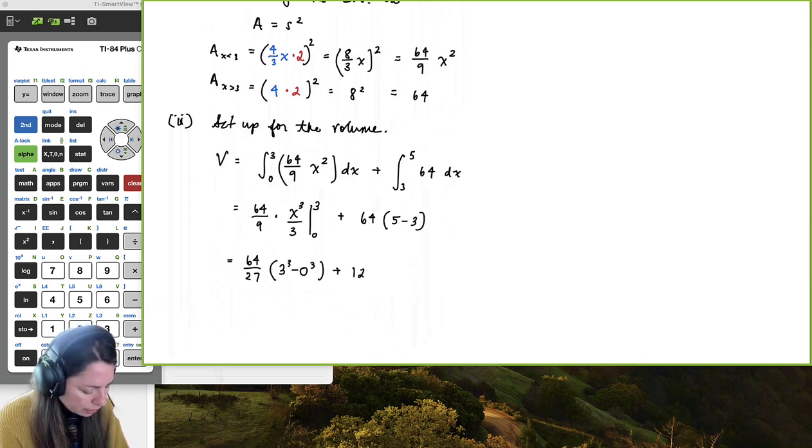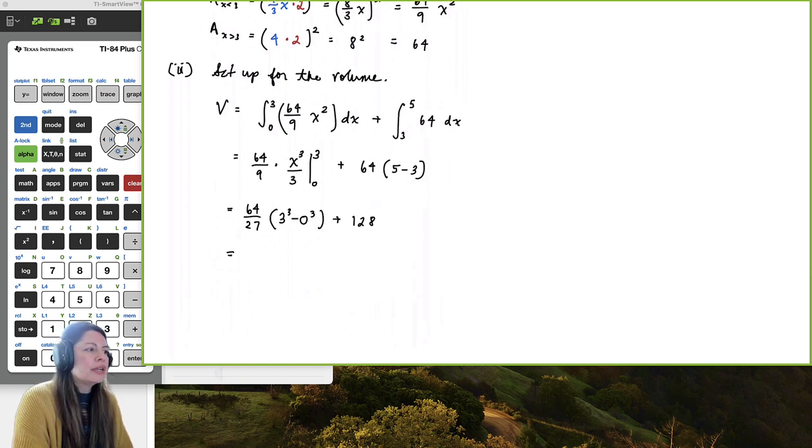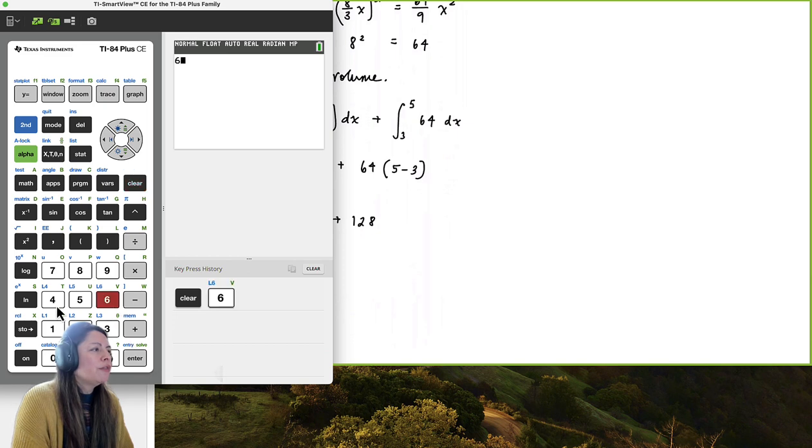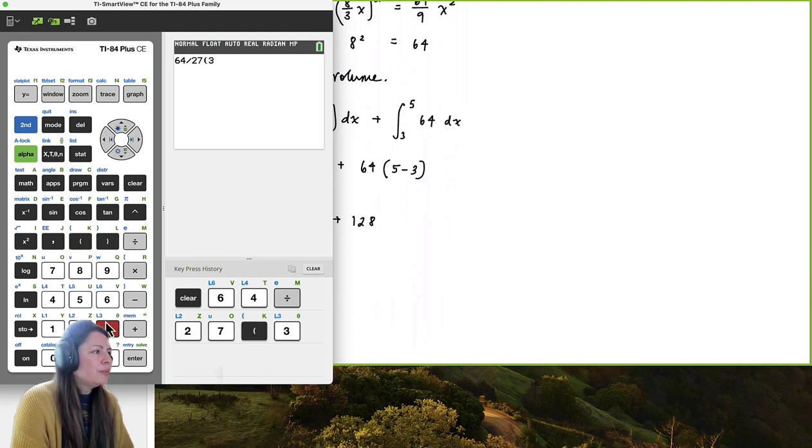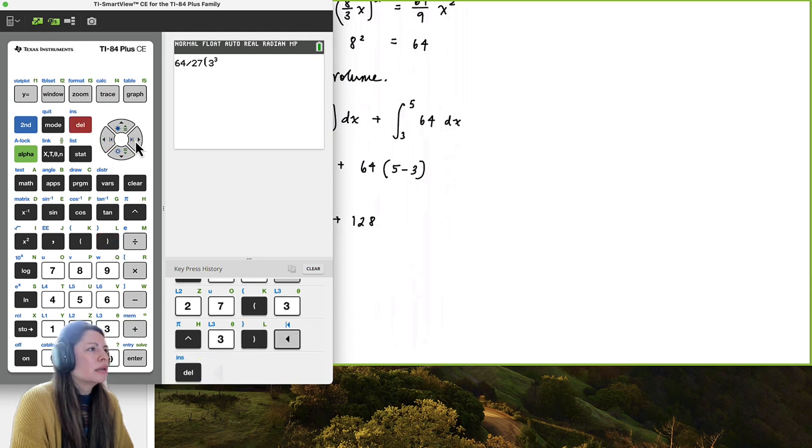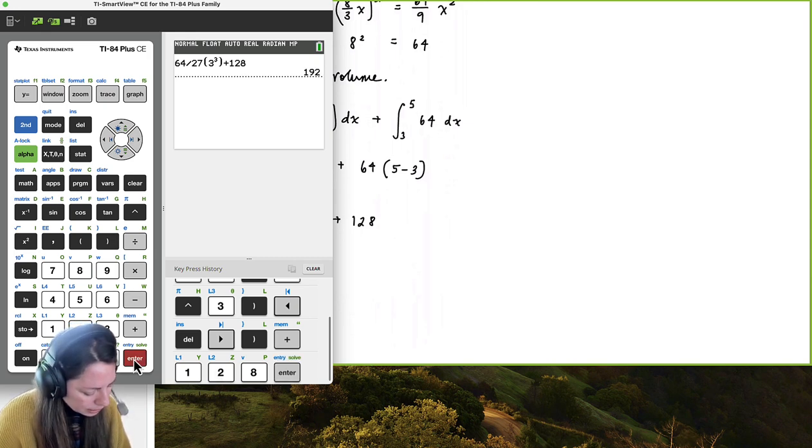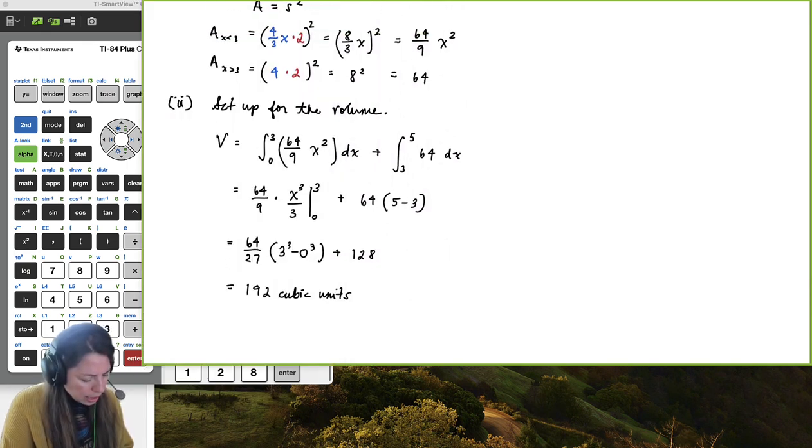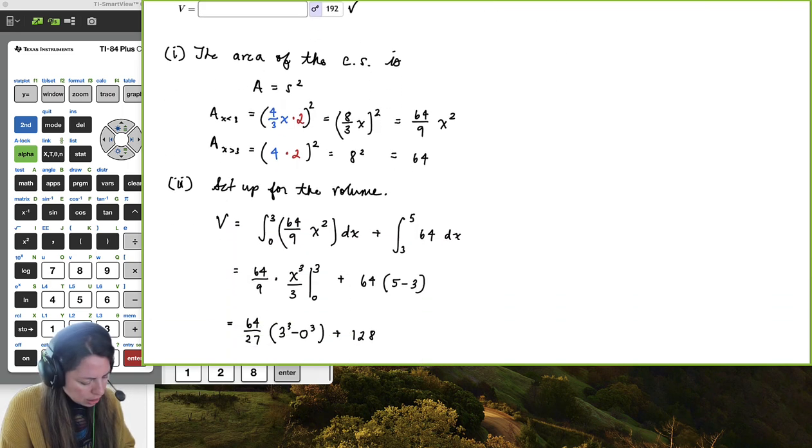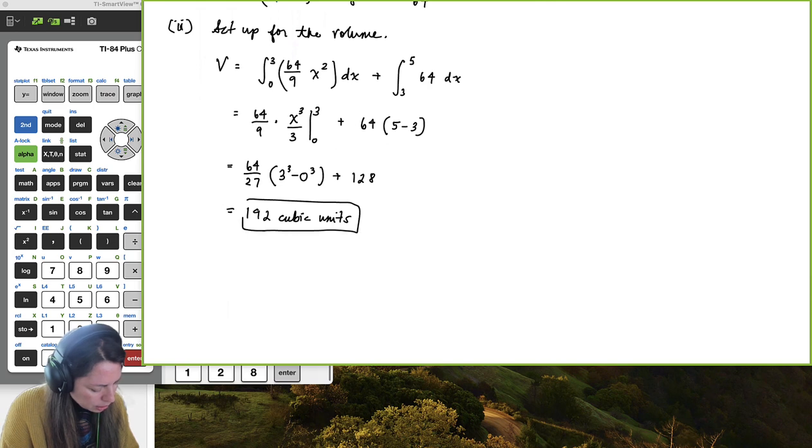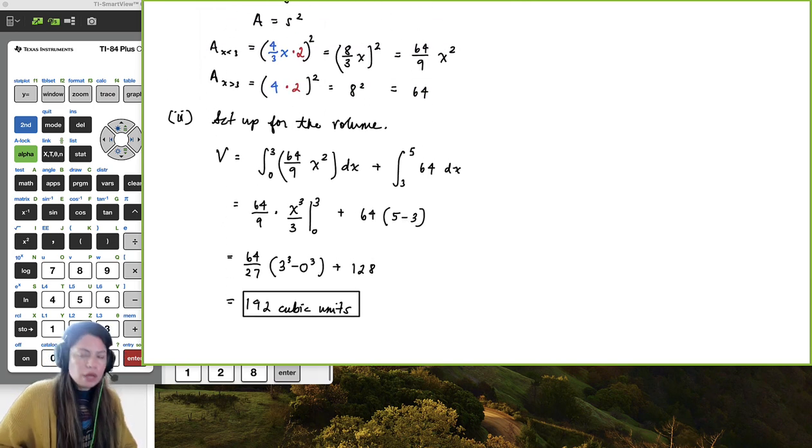And then I'm going to go ahead and stop there and go to my calculator and just put 64 over 27 and then parenthesis 3 cubed and then I'll go ahead and add 128. And we get 192. So this is exact and we'll put cubic units. And we can see from up here that that is the result. So I'll go ahead and box it. I hope that helps.